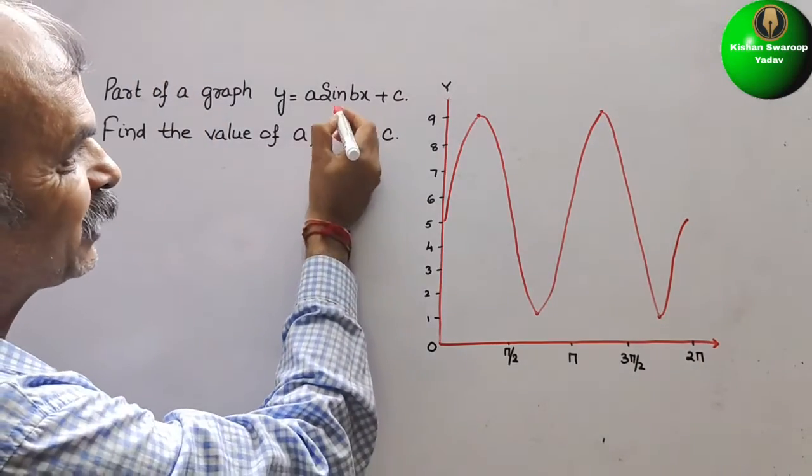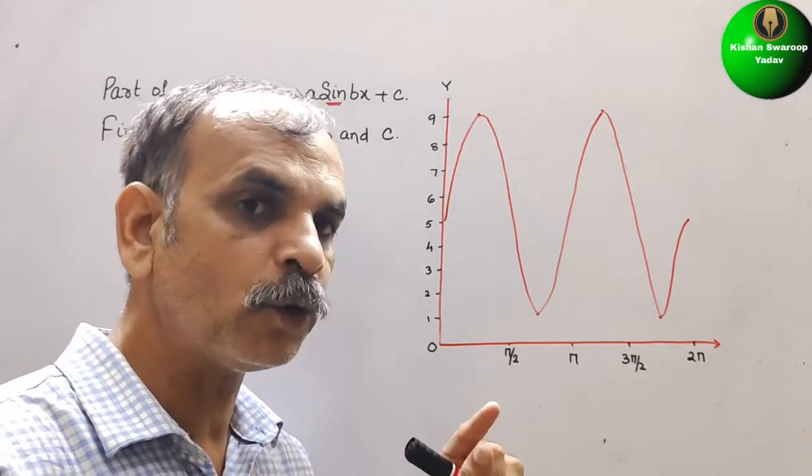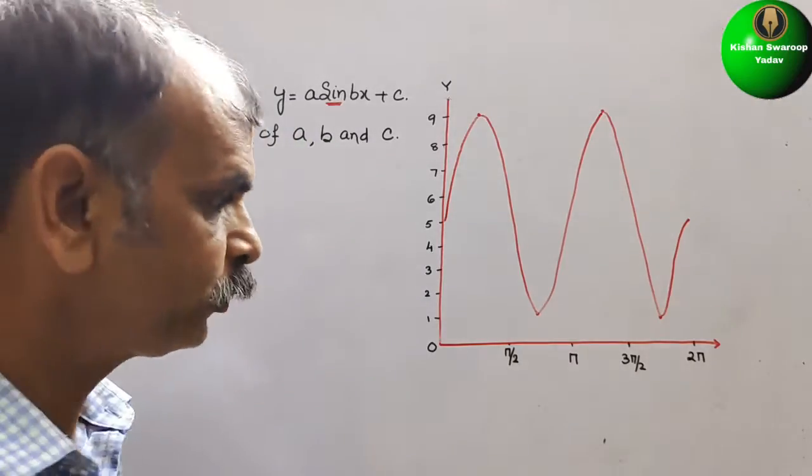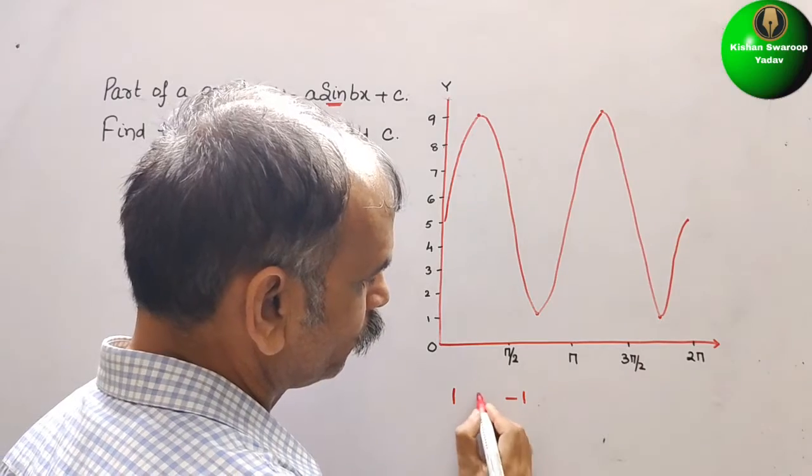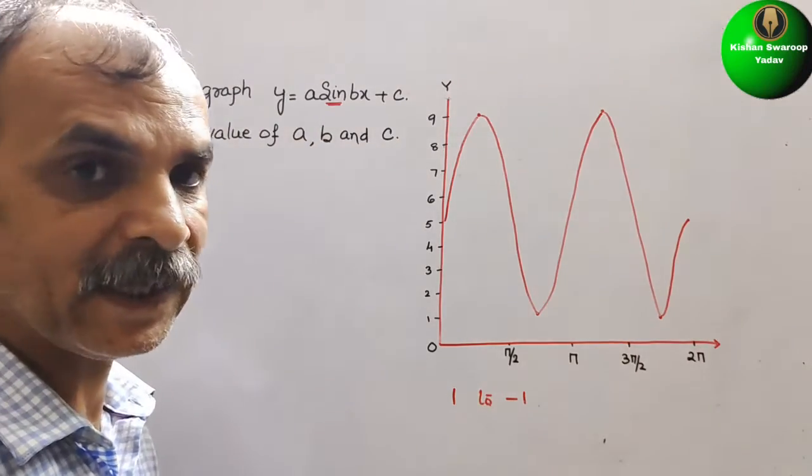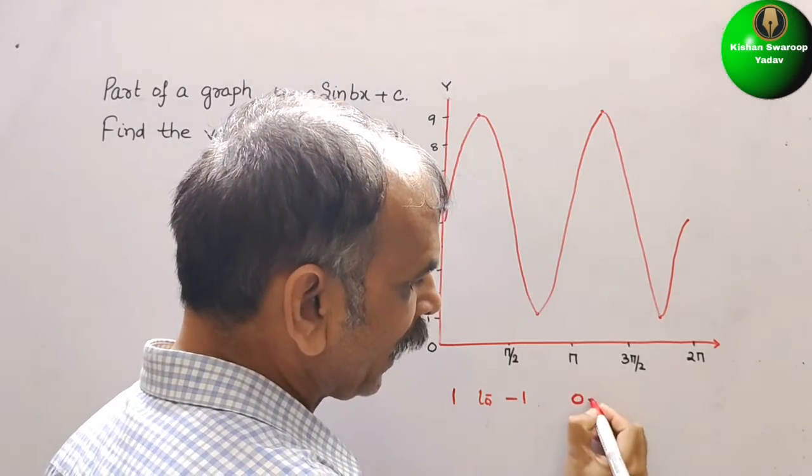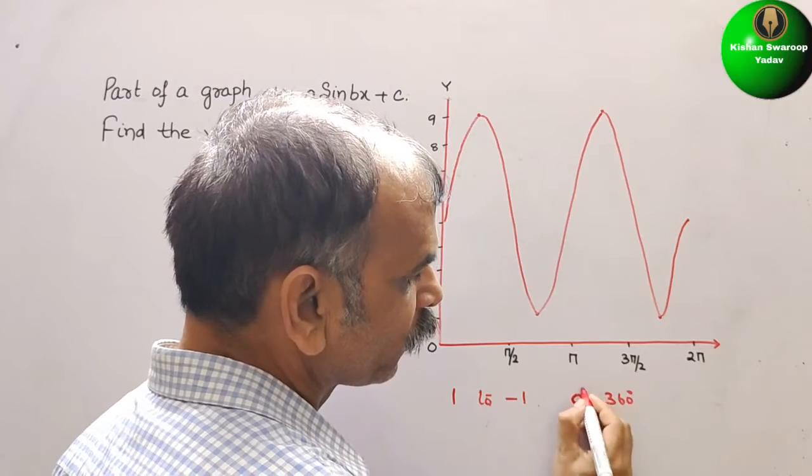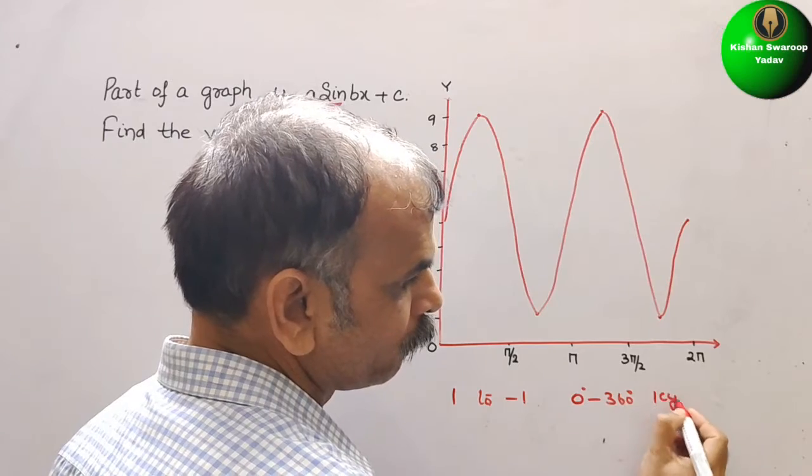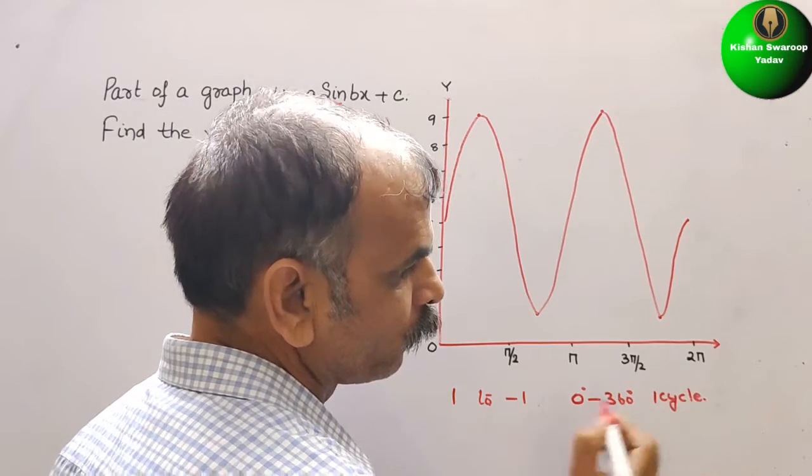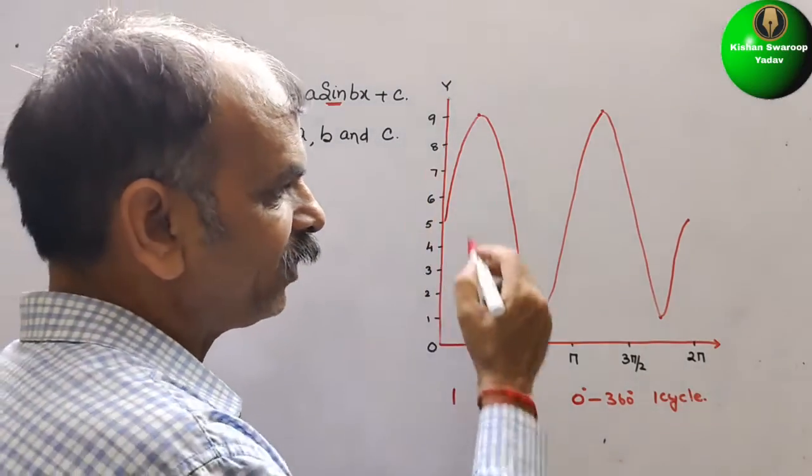So first they have given sin. So we know that sin varies from 1 to minus 1. That is the amplitude. Second thing in sin, what is that? It will start with 0 and at 360 degree. One complete cycle. So this is the sin wave.